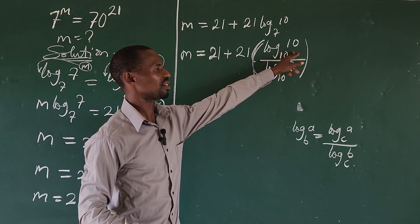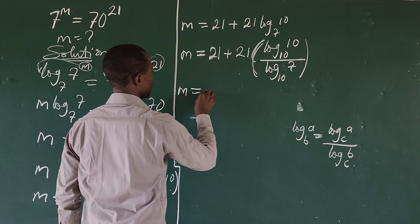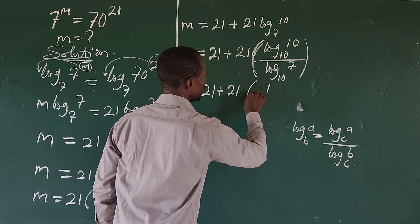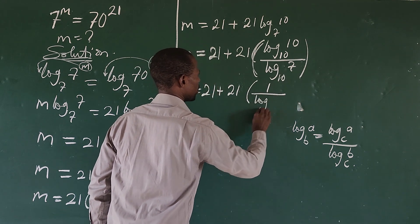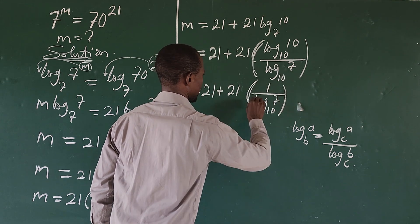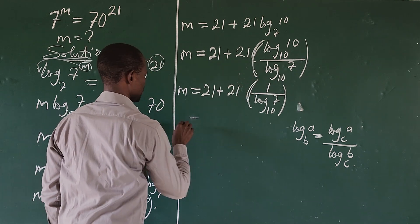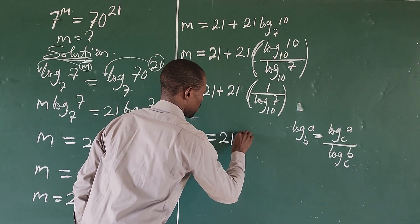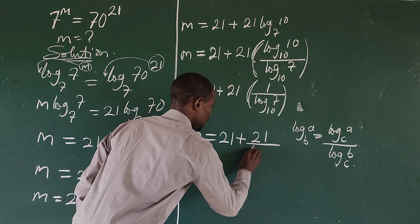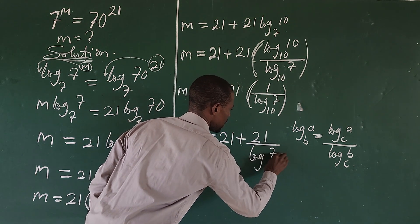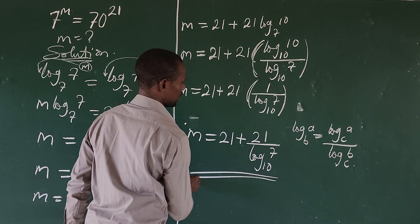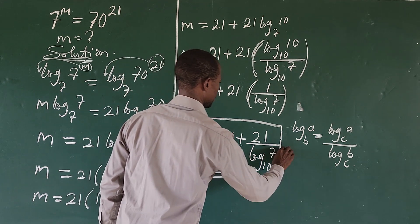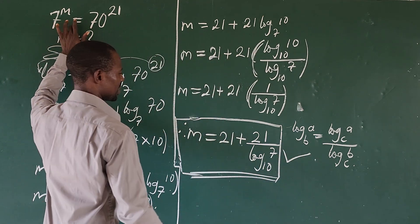We know that the log of any number to its own base gives 1. So log base 10 of 10 equals 1. Therefore m equals 21 plus 21 times 1 divided by log base 10 of 7, which simplifies to m equals 21 plus 21 over log base 10 of 7. This is the value of m, and this marks the end of this math challenge.